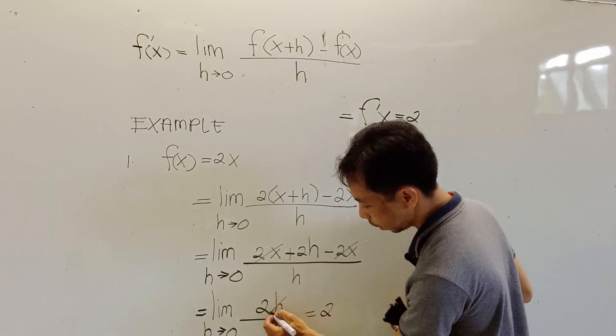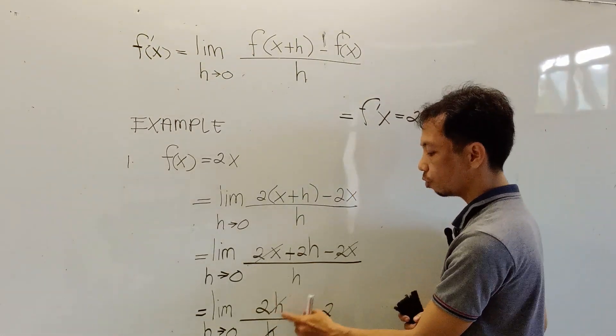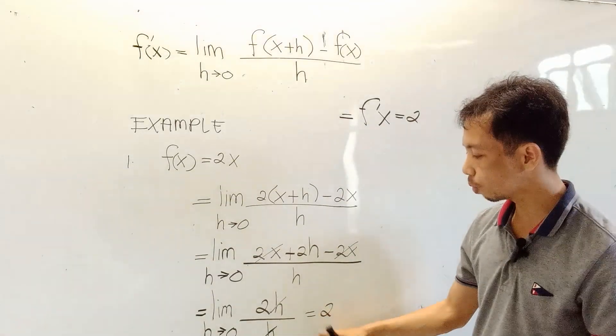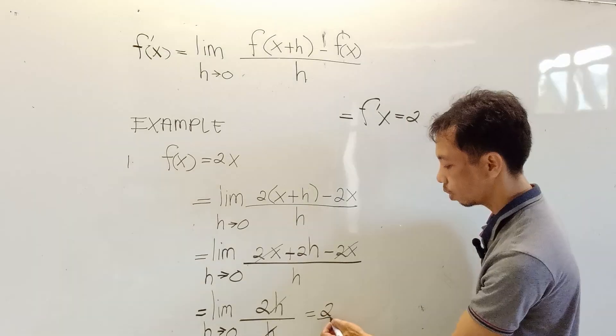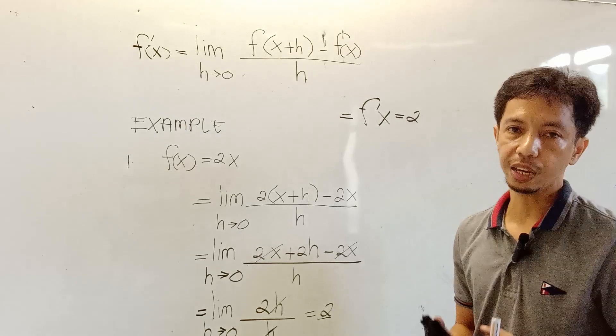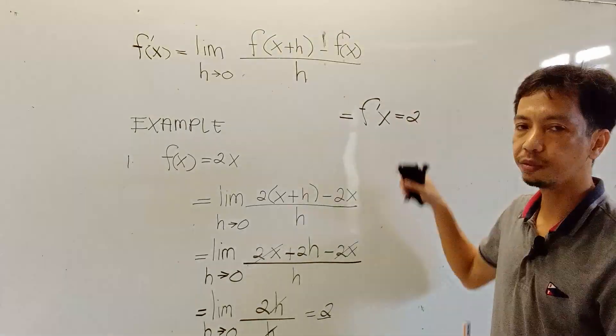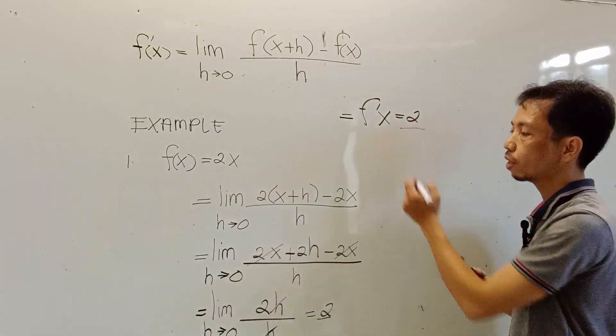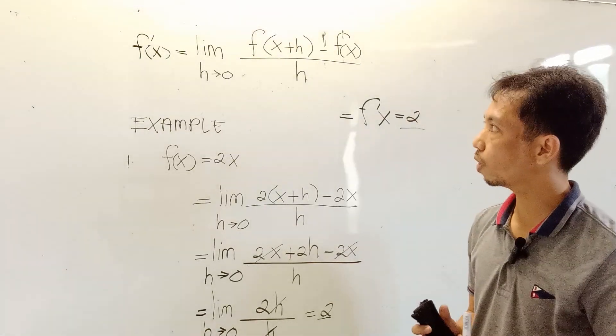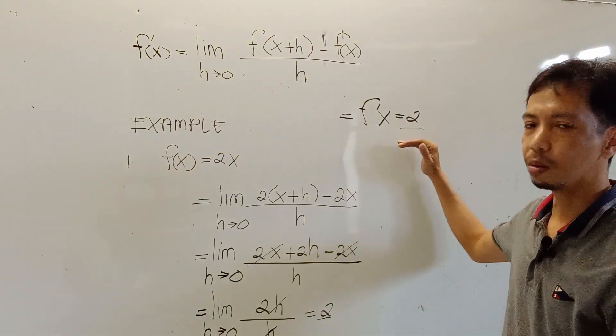We can cancel out the h variable. We have h. So basically, it is equal to positive 2. We can say that the derivative of the function 2x is equal to positive 2. Okay, the derivative of the function 2x using the definition of limit is positive 2.